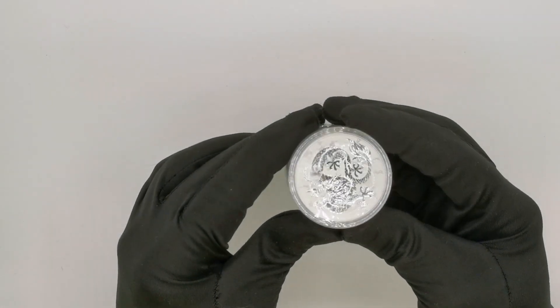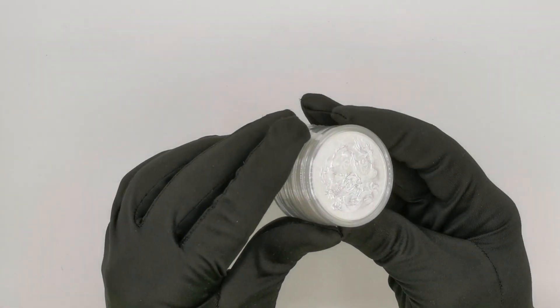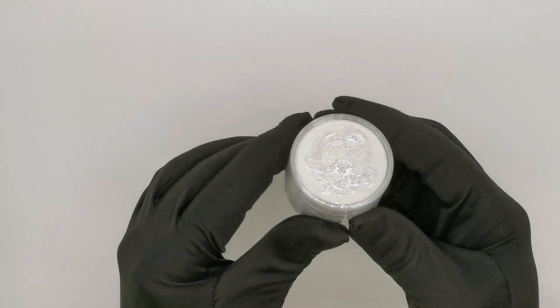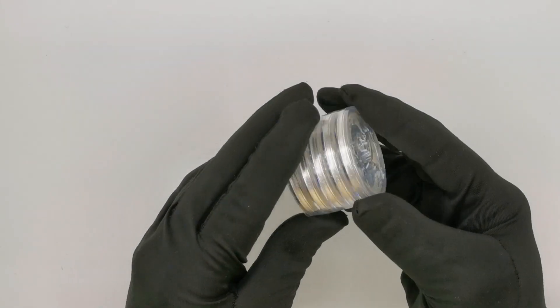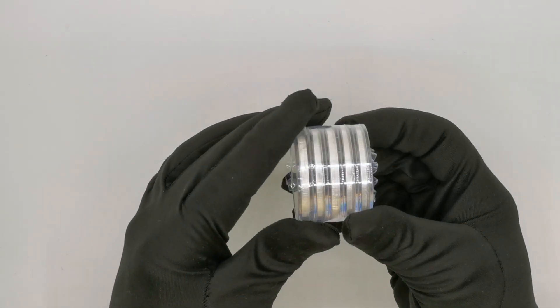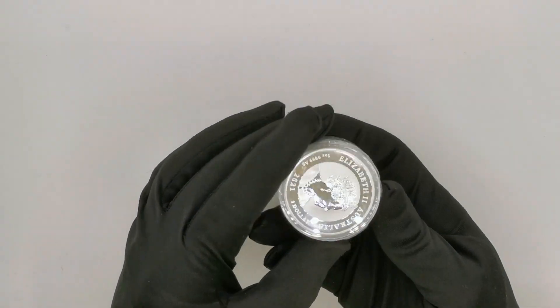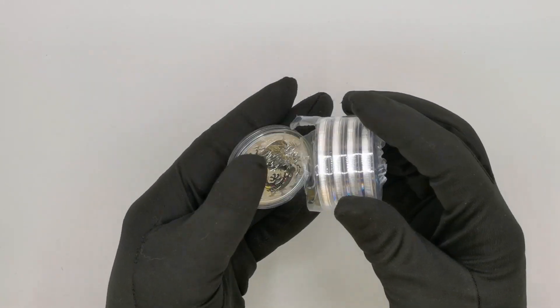So the coin itself comes in a capsule. It's the same quality bullion as your regular Kookaburra or Lunar bullion produced by the Perth Mint, and the capsules come in a shrink wrap and you get up to ten coins in a shrink wrap. So let's take the coin out and have a closer look at it.